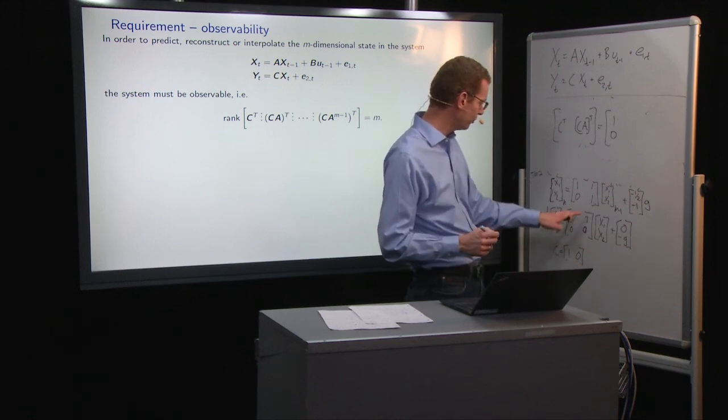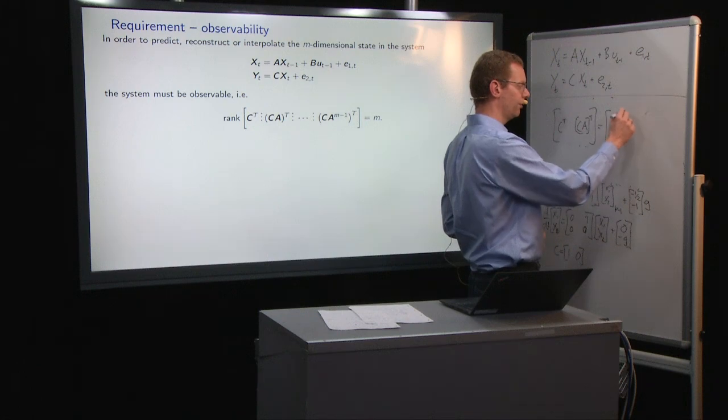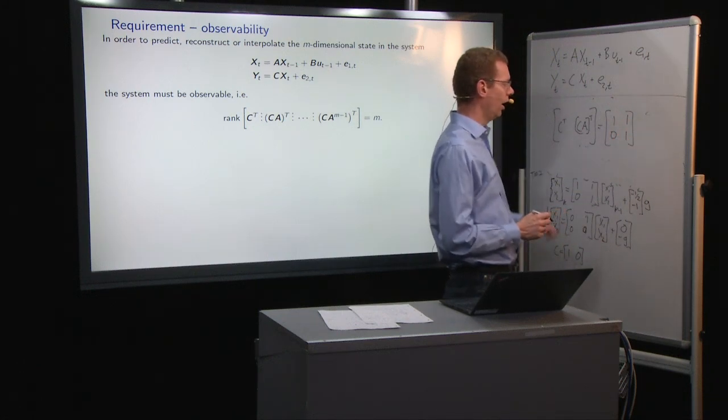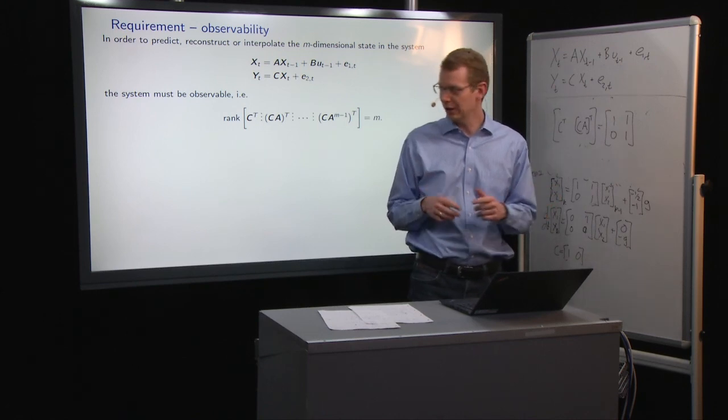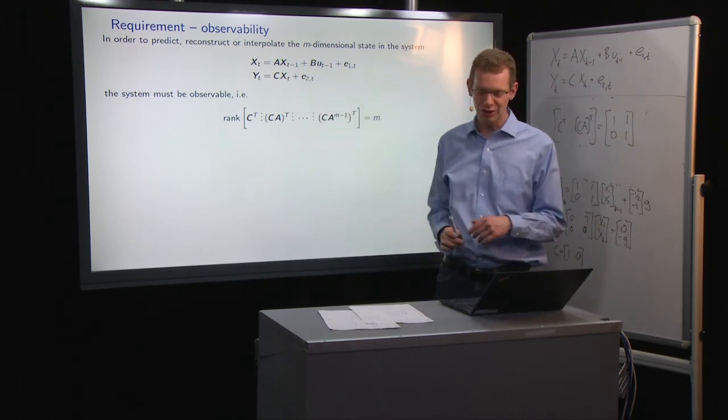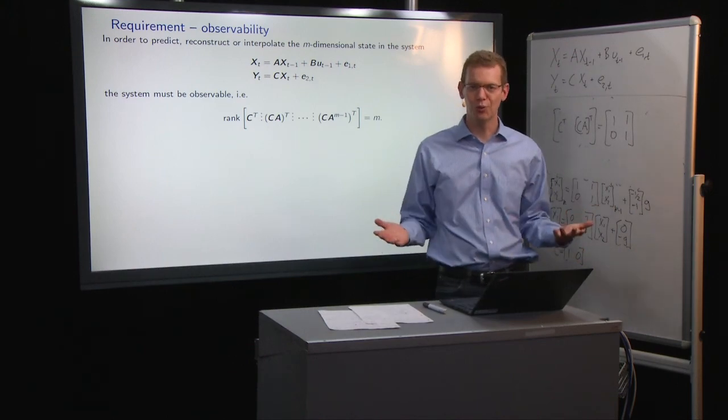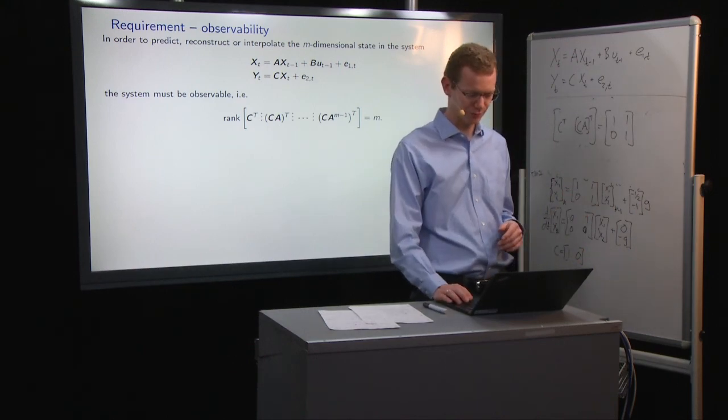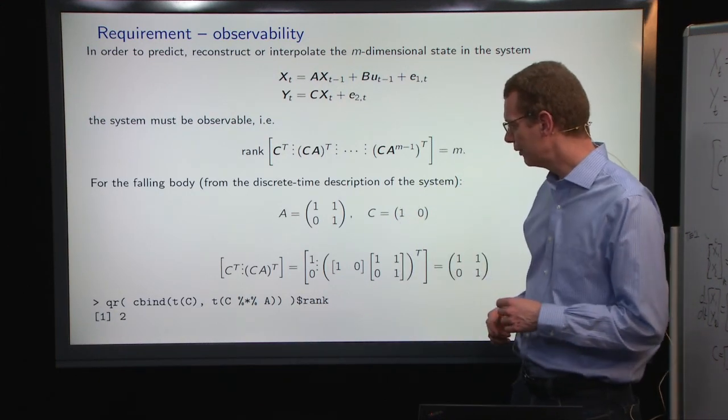C times A, you take this and pre-multiply on the A matrix up here. You can go through it yourself, you get a one, one. And it's easy to see that this matrix has full rank, which means that this system with the definition of the falling body, if you just observe the position, then we have observability.